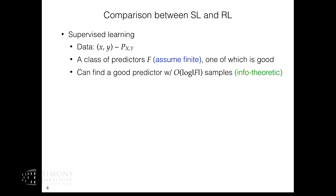The simplest result that lays the foundation for learning theory is the following: if you give me log|F| number of samples, I can find a good predictor out of this class. This is an information-theoretic result — ignoring computation — and you can get it by empirical risk minimization.